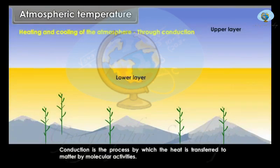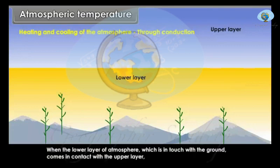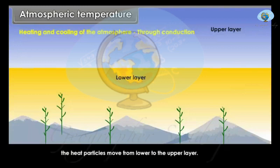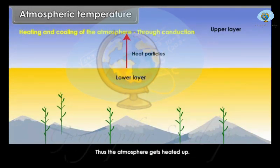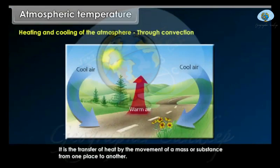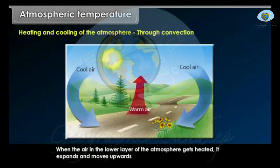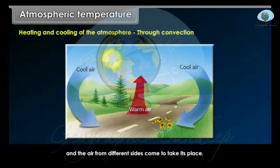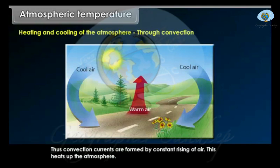Through Conduction. Conduction is the process by which heat is transferred to matter by molecular activities. When the lower layer of the atmosphere, which is in touch with the ground, comes in contact with the upper layer, the heat particles move from the lower to the upper layer, and thus the atmosphere gets heated up. Through Convection. Convection is the transfer of heat by the movement of a mass or substance from one place to another. When the air in the lower layer of the atmosphere gets heated, it expands and moves upwards, and air from different sides comes to take its place. Thus, convection currents are formed by the constant rising of air, heating up the atmosphere.